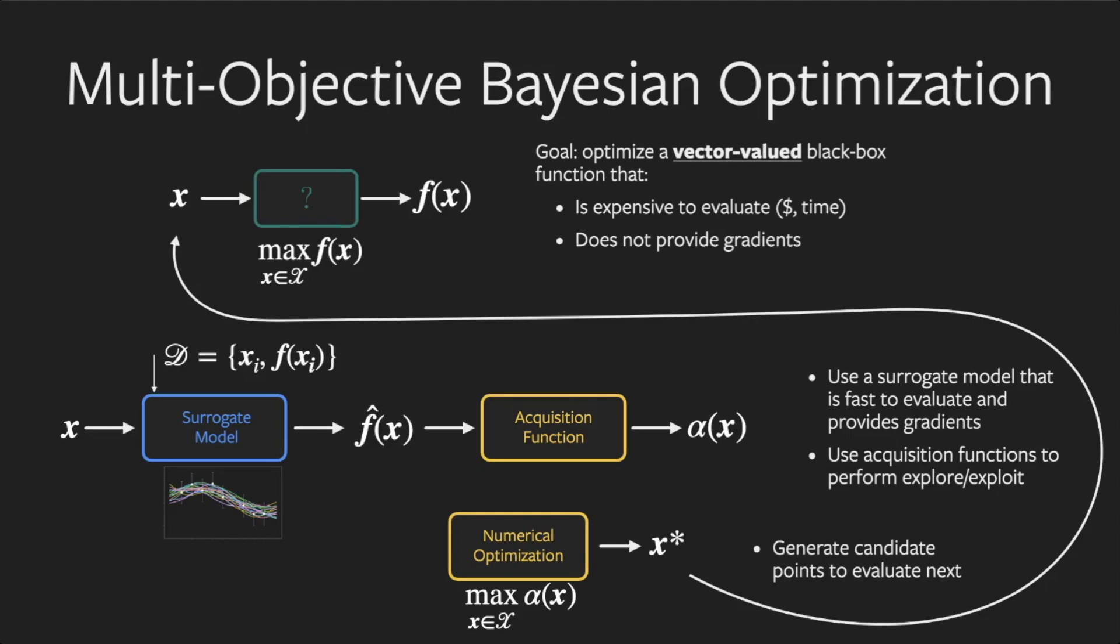Bayesian optimization relies on a probabilistic surrogate model in conjunction with an acquisition function to provide a utility value for a new candidate point. Numerical optimization is used to select a candidate to evaluate on the true function.